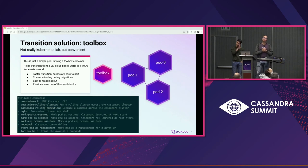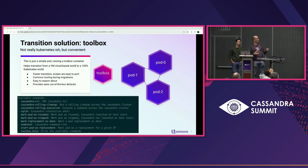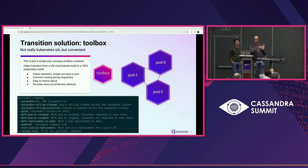A pattern we use a lot on Kubernetes is the toolbox. This thing is kind of the old world of bare-metal machines making its way to Kubernetes. It's not really Kubernetes-ish — not recommended — but it's really efficient. It almost feels like you're SSHing into your server. On our toolbox, we typically have commands like rolling cleanup, which does exactly what it says: cleanup across all nodes, plus a bunch of other commands. It's a useful pattern we still have today.